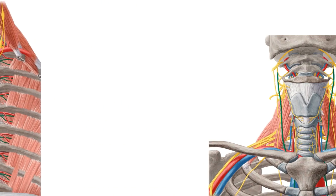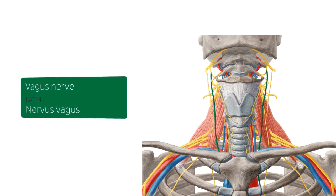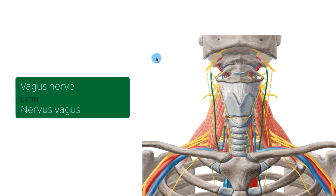The next structures we're going to be talking about are the vagus nerves. I'm now showing a different image where you can see where they come from — the right vagus nerve and the left vagus nerve. Keep in mind that we're looking at an anterior view of the neck, where you can see the mandible, the larynx, a bit of the trachea, and the two clavicles, showing where the two vagus nerves originate.